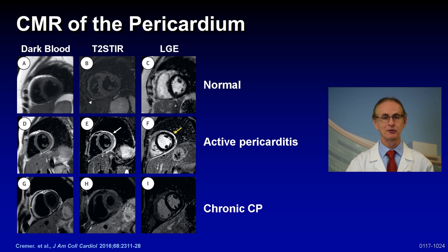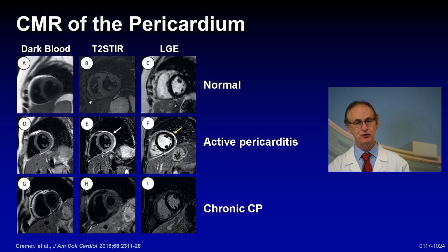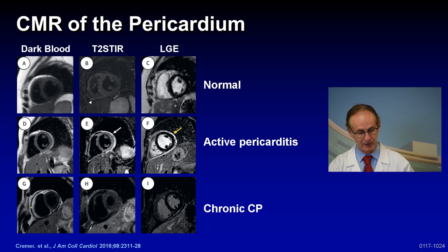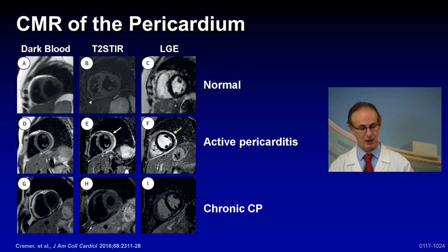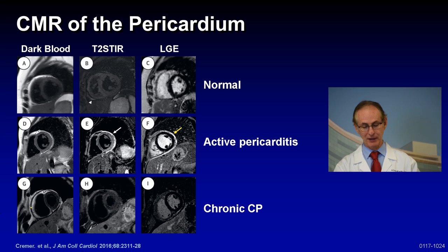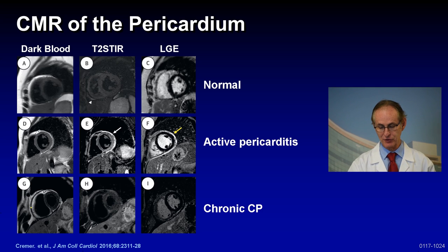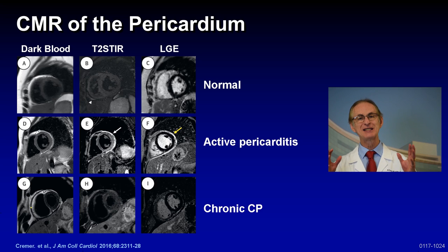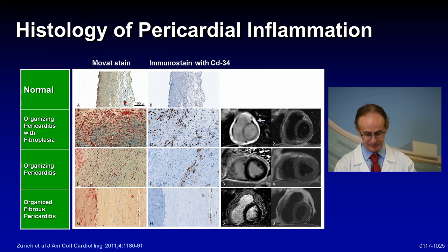The bottom panel shows chronic constrictive pericarditis. Panel G shows a black line — this is increased thickness, more than 4 millimeters, implying increased pericardial thickness. Panel H shows no edema, and panel I shows no inflammation. These are the different stages of pericarditis as picked up by MRI.